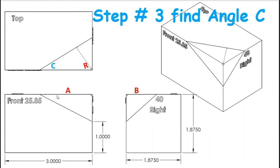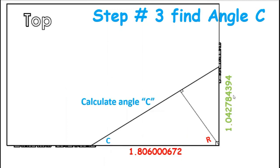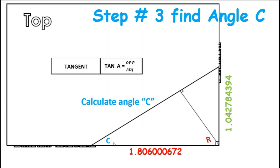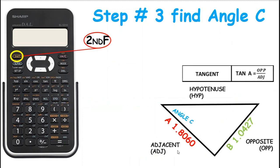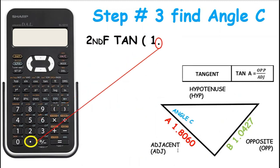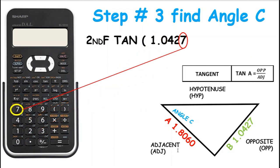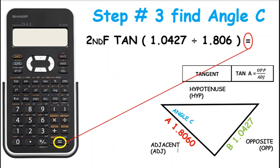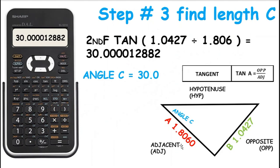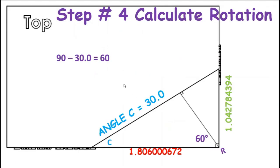So now we have length A and length B, and we need to find angle C. Because once we find angle C, we can subtract that from 90 and come up with angle R. So we have this length here and this length here, and we're going to calculate C using opposite and adjacent — we're going to use tan. Second function tan, bracket, 1.427 divided by 1.8, equals 30 degrees. So angle C equals 30 degrees. 90 minus 30 equals 60, so therefore our rotation angle is going to be 60 degrees.